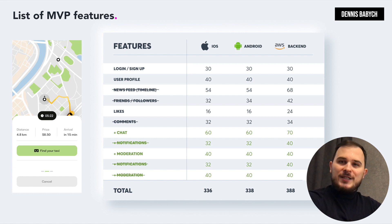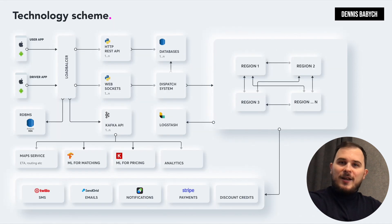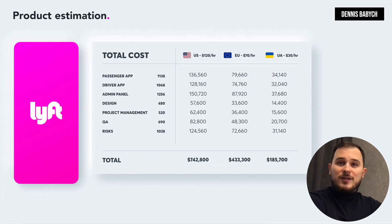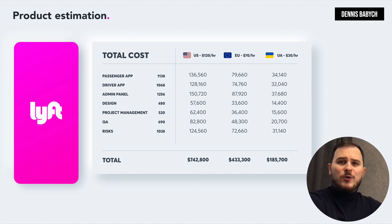Simply follow these four easy steps. First, eliminate any features that are unnecessary or useless to you at the moment. Second, select the appropriate technology stack, which can help you save money on maintenance, support, cloud infrastructure setup, and high loads. Third, consider using software developers from Ukraine. By comparing prices in the EU and the US, you can quickly determine where you can get the best value for your money.